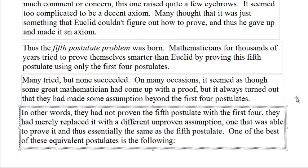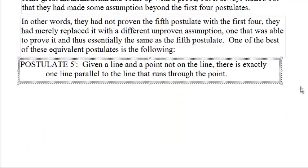One of the best of these equivalent postulates is the following. Postulate five prime, slightly different, but basically equivalent: Given a line and a point not on the line, there is exactly one line parallel to the line that runs through the point.